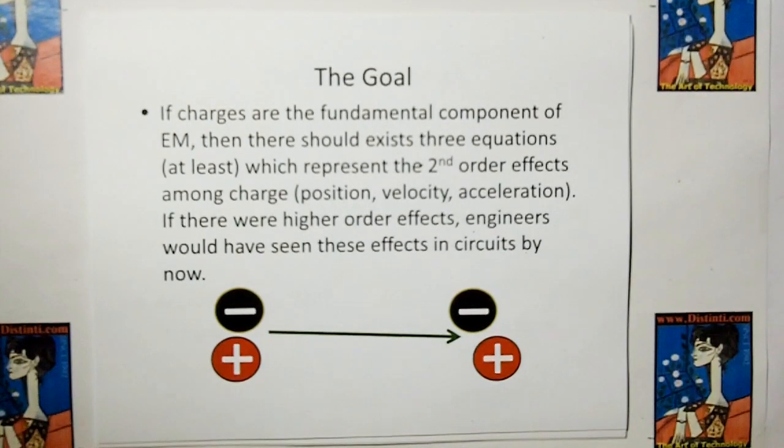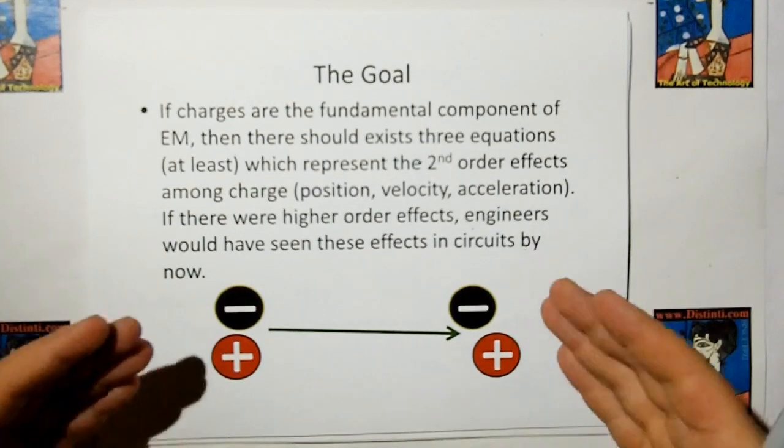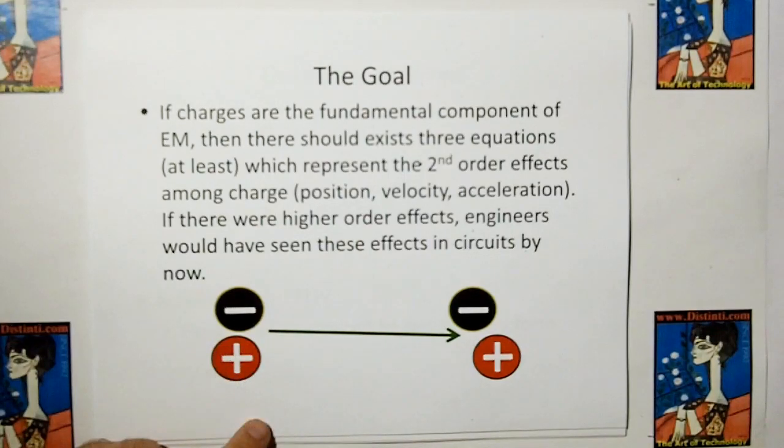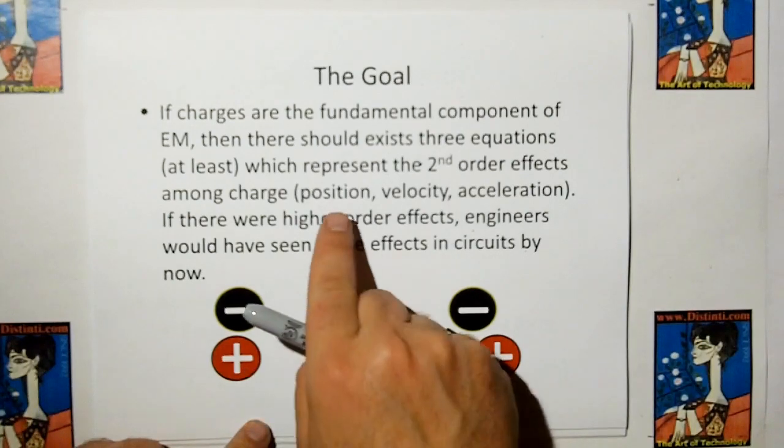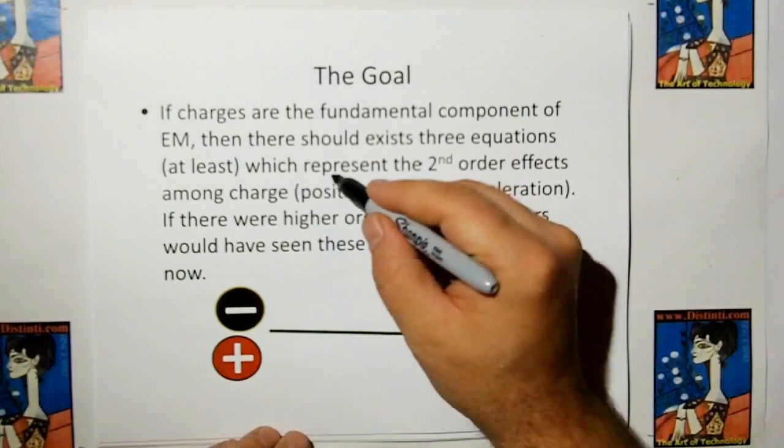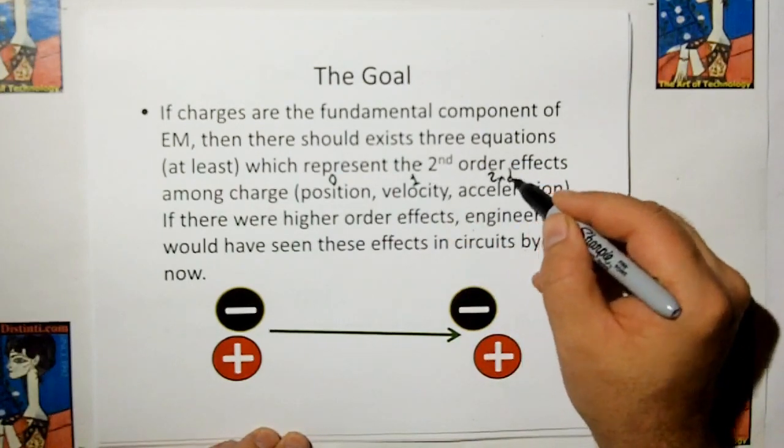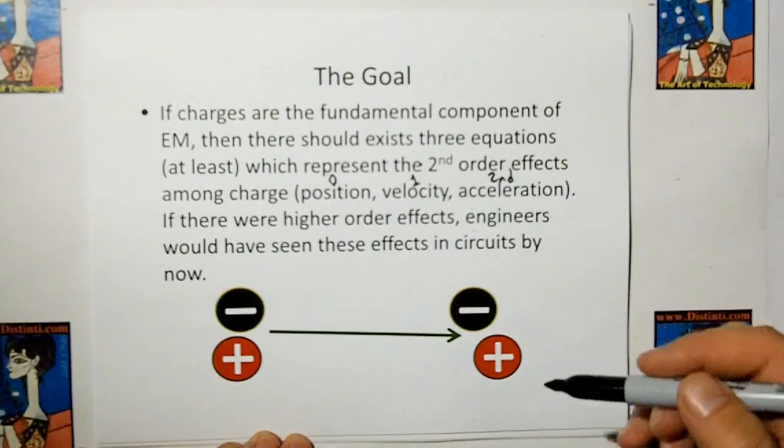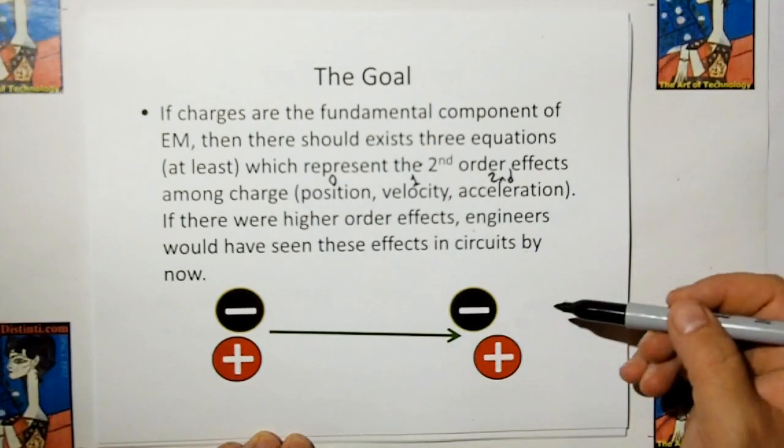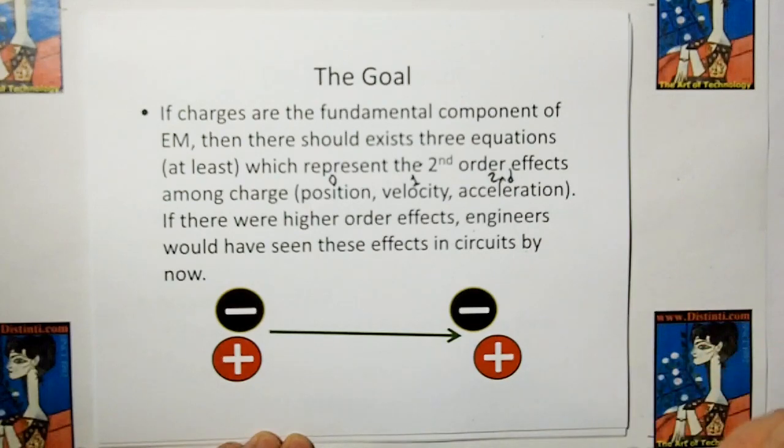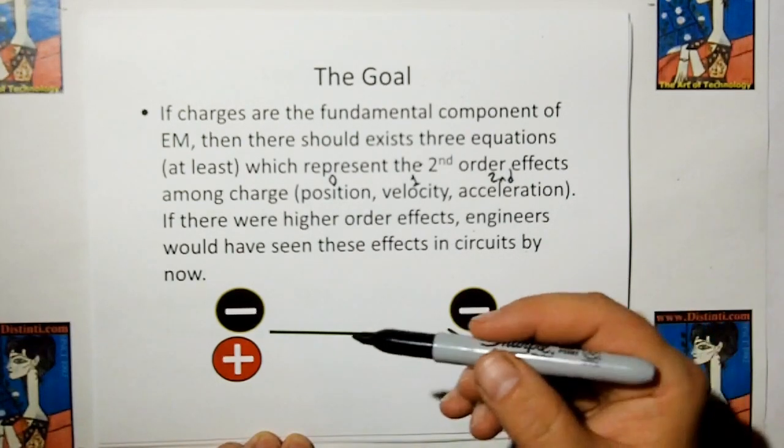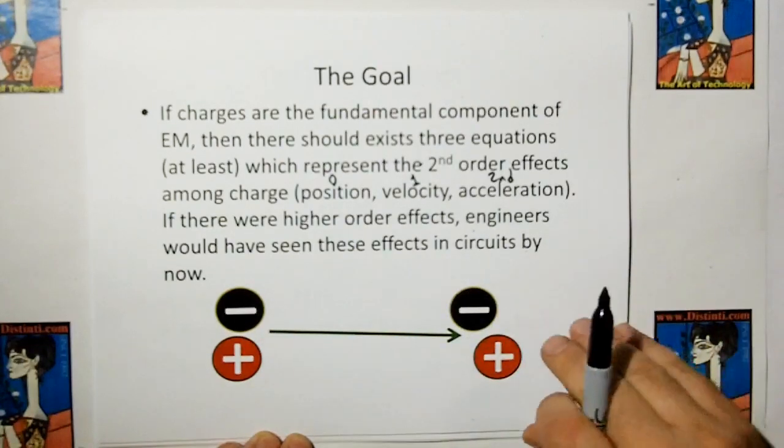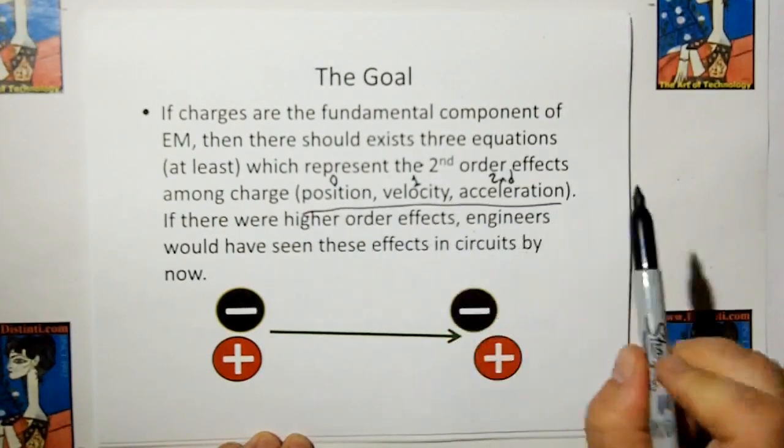The original goal for new electromagnetism was to write all of the models of electromagnetism into a second order effect. In other words, we're going to have a charge-to-charge effect that includes both position, velocity, and acceleration. This would be the zero order, the first order, and the second order term. That was the goal. Because if charges are the most fundamental building blocks of electromagnetic theory, then electromagnetism must be reduced to charge-to-charge effects in second order effects.